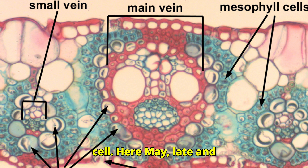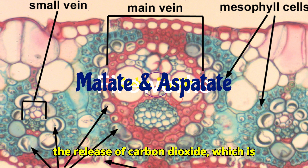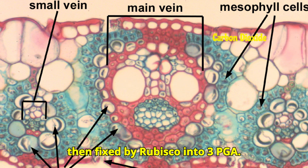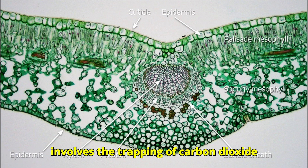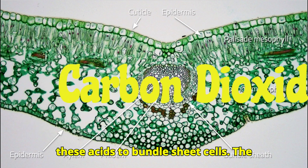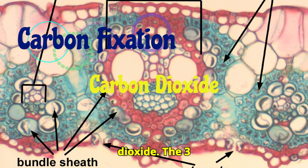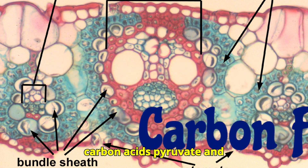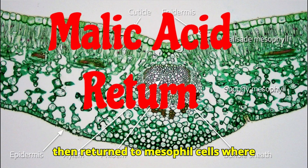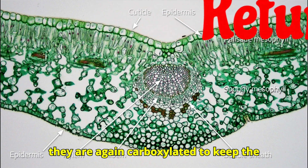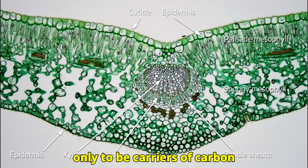In bundle sheath cells, malate and aspartate undergo decarboxylation with the release of carbon dioxide, which is then fixed by RuBisCO into 3-PGA. The division of labor involves the trapping of carbon dioxide by mesophyll cells and the transfer of these acids to bundle sheath cells for decarboxylation and fixation. The three-carbon acids pyruvate and alanine, resulting from the decarboxylation of C4 acids, are then returned to mesophyll cells where they are again carboxylated to keep the cycle going. The C4 acids formed in mesophyll cells serve only as carriers of carbon dioxide.